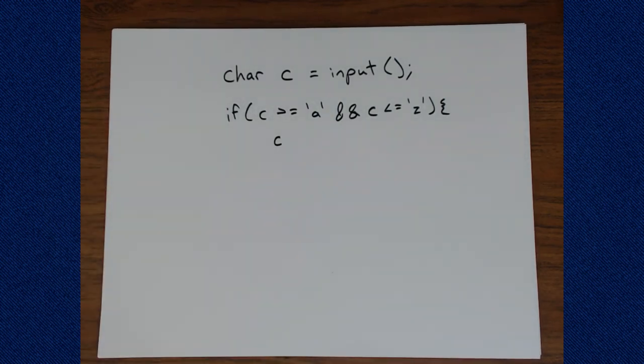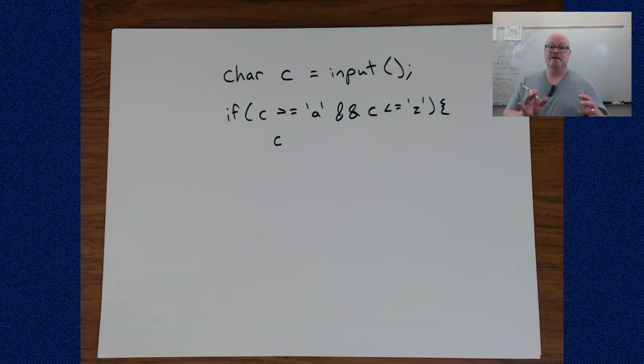So we have to start to understand some things. Particularly, what we want to recall is that the letters all show up in order in the table. So we have A and then B and then C and then D and so on, lowercase and the same relationship, uppercase.